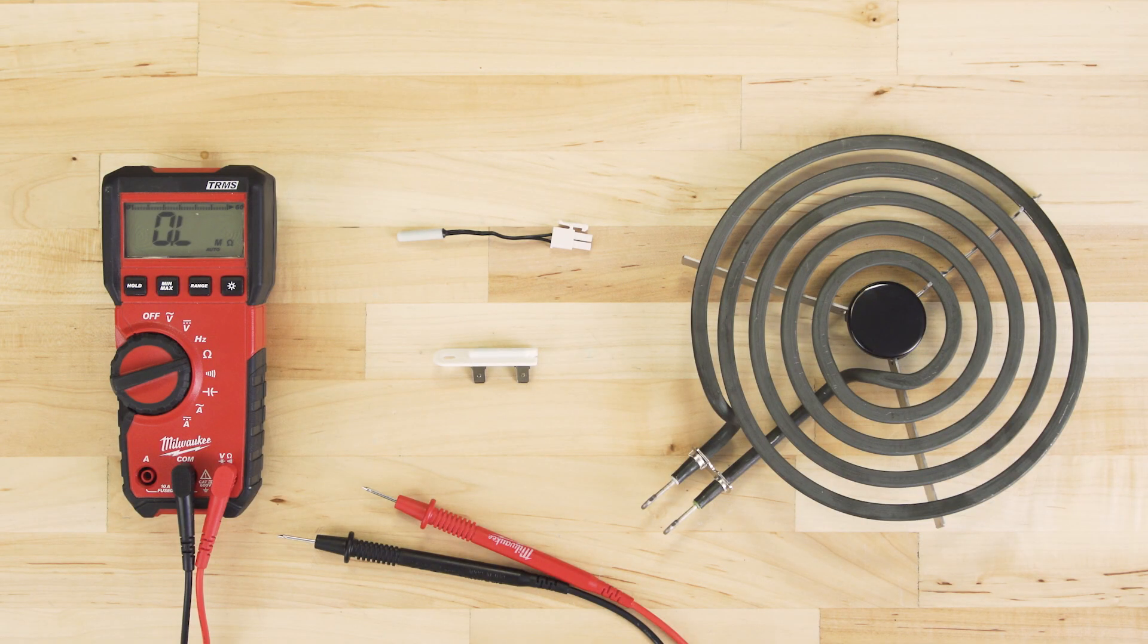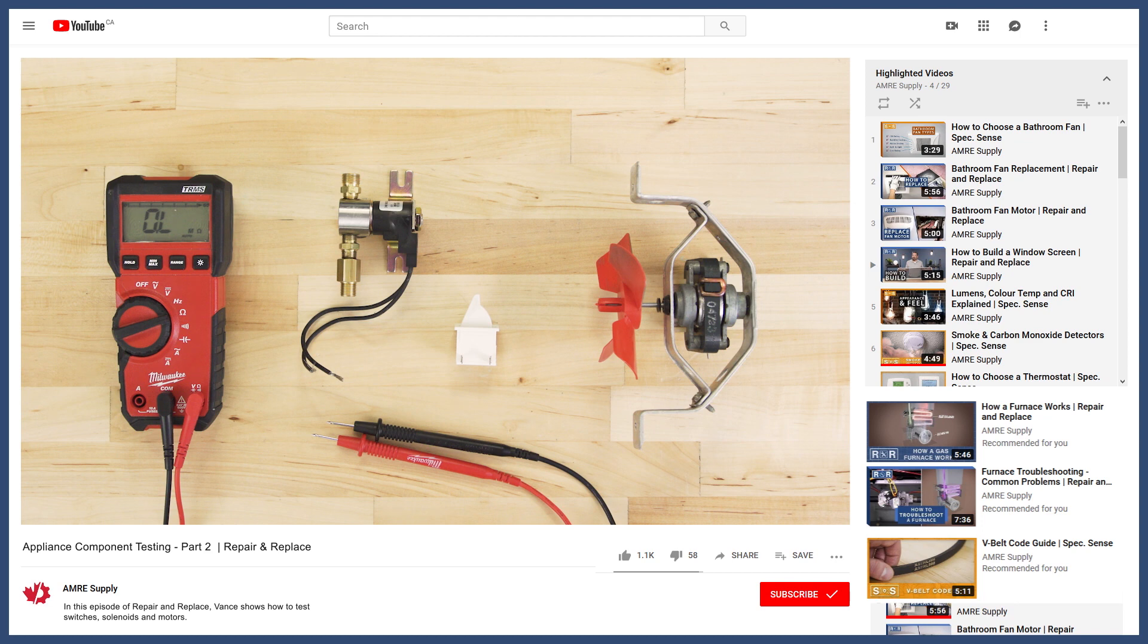In part 1, we'll take a look at fuses, heating elements, and thermistors. In part 2, we'll look at switches, solenoids, and motors. Let's begin.